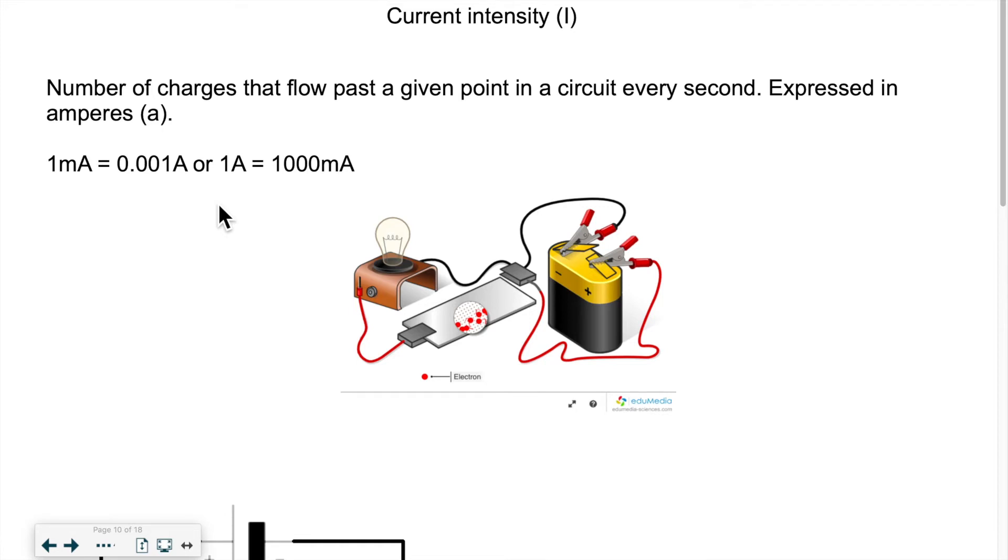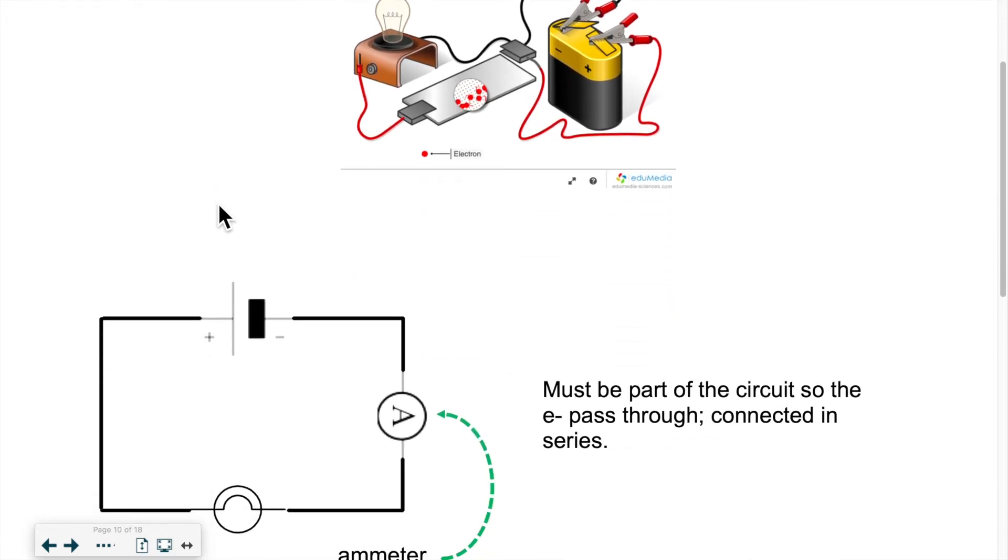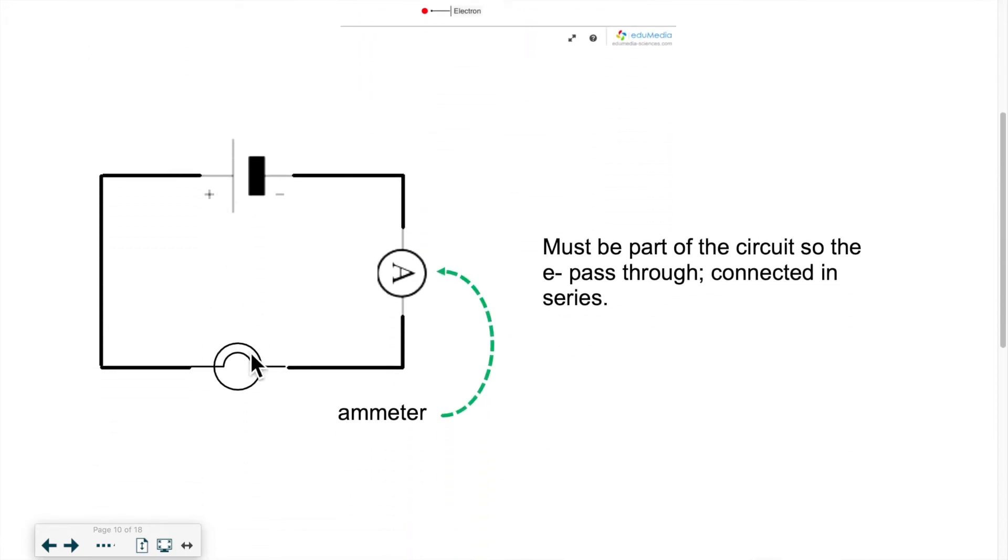So how do we effectively measure current intensity? We need an ammeter. The ammeter has to be part of the circuit because the electrons have to pass through, the current has to pass through the ammeter for the ammeter to basically count the amount of particles that are passing through. So it's connected in series. In other words, consecutively with other components of the circuit.